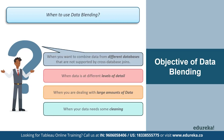There is less data to combine when the data is already aggregated, and generally performance improves. Finally, you can use data blending when your data needs some cleaning. If your tables do not match up correctly after a join, set up data sources for each table, make any necessary customizations — which basically includes renaming columns, changing column data types, creating groups, and so on — and then use data blending to combine the data.